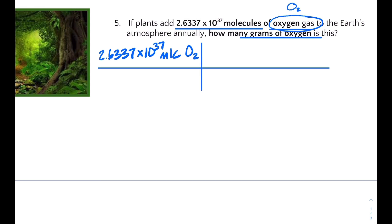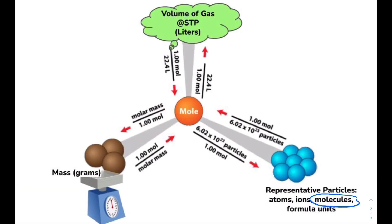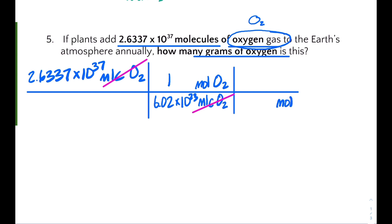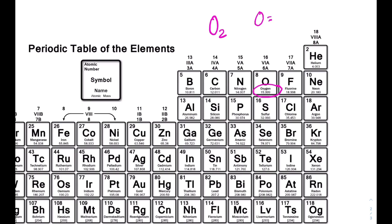Let's set up our dimensional analysis. We're given molecules, so our first step is to convert molecules to moles, and our second step converts moles to grams since we're asked for mass. Molecules of O₂ go at the bottom; one mole equals 6.02×10²³ molecules, so molecules of oxygen cancel. Now converting moles of oxygen gas to grams: the molar mass of oxygen is 16.00 g/mol, and since there are 2 atoms per molecule of O₂, we multiply by 2, giving 32.00 grams per mole.